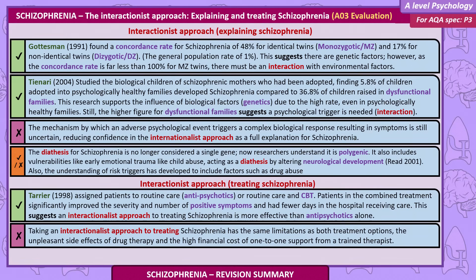The mechanism by which an adverse psychological event triggers a complex biological response resulting in symptoms is still uncertain, reducing confidence in the interactionist approach as a full explanation. The diathesis for schizophrenia is no longer considered a single gene — researchers now understand it is polygenic — and it also includes vulnerabilities like early emotional trauma such as child abuse, acting as a diathesis by altering neurological development (Read, 2001). Risk triggers have also expanded to include drug abuse. Tarrier assigned patients to routine care, antipsychotics, or routine care and CBT; the combined treatment group significantly improved in positive symptom severity and had fewer days in hospital, suggesting an interactionist approach to treatment is more effective than antipsychotics alone. However, it carries the same limitations as both options — unpleasant drug side effects and the high financial cost of one-to-one therapeutic support.